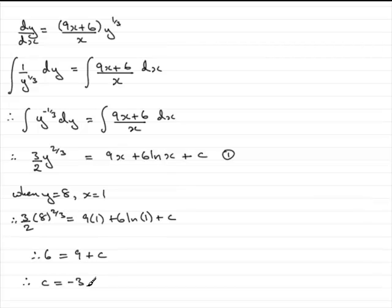What we've got to do is put that constant back into this equation, number 1. We can say sub c equals minus 3 into 1.